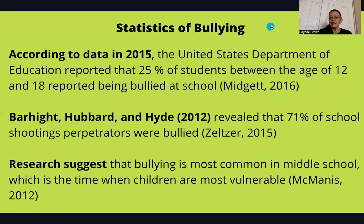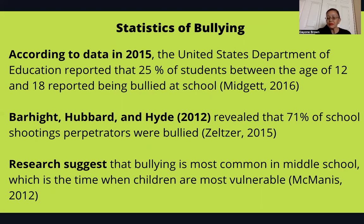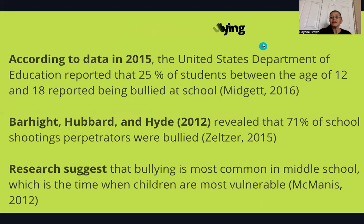Here are some statistics gathered through research. According to 2015 data, the United States Department of Education reported that 25 percent of students between the ages of 12 and 18 reported being bullied at school. Barr-Haight, Hubbard, and Hyde (2012) revealed that 71 percent of school shooting perpetrators were bullied. Research suggests that bullying is most common in middle school, which is the time when children are most vulnerable.